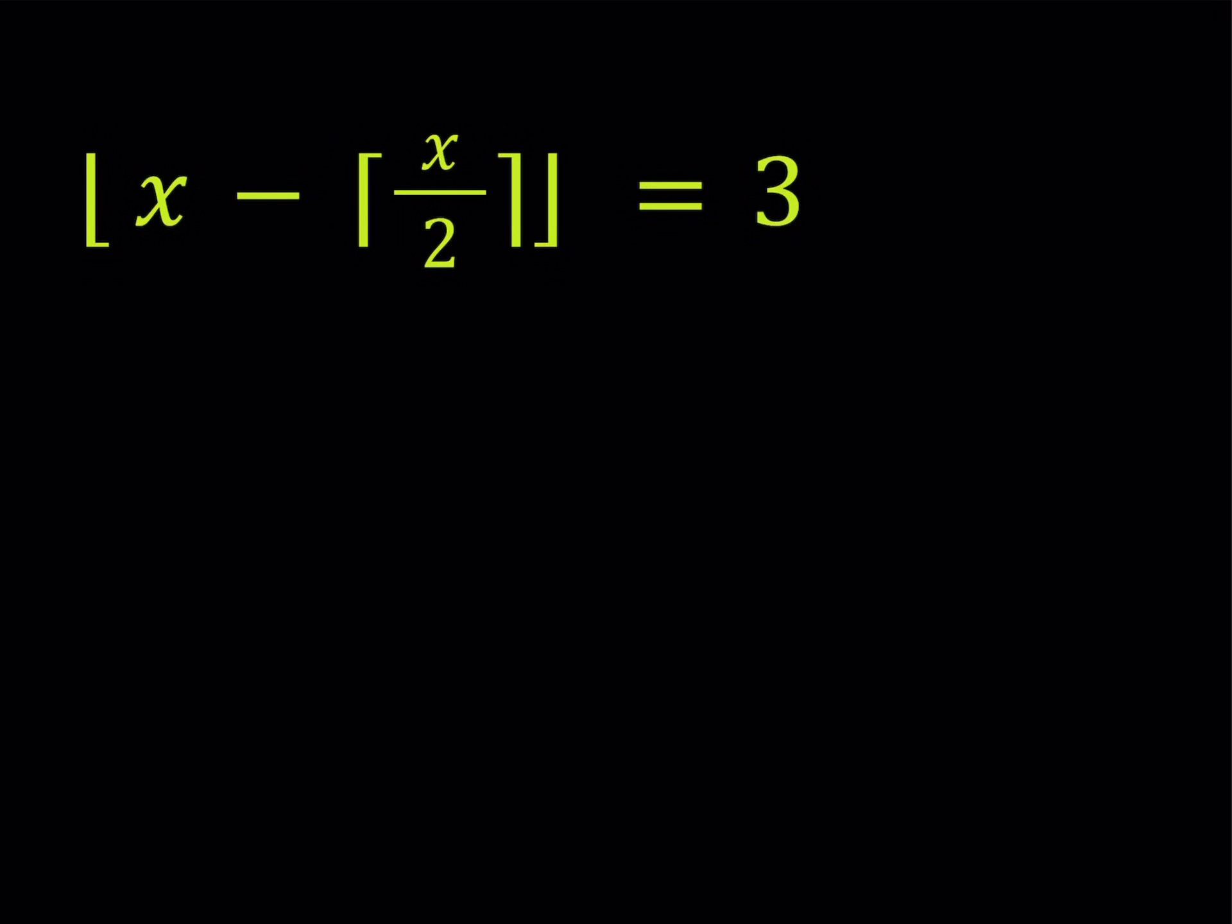Hello everyone, in this video we're going to be solving a floor and ceiling equation, 2 in 1. So we have the floor value of x minus the ceiling value of x over 2 is equal to 3, and we're going to be looking for x values.